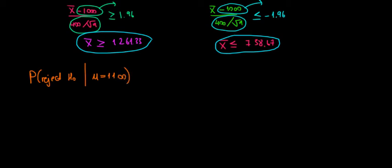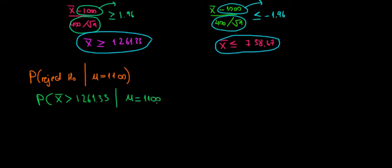We reject the null hypothesis when the sample mean that we find is greater than the critical value. So what's the probability of finding such a value? X̄ must be greater than 1261.33 given that the true population mean is 1100. Since we're dealing with probability, we're going to standardize this X̄ into a Z value.